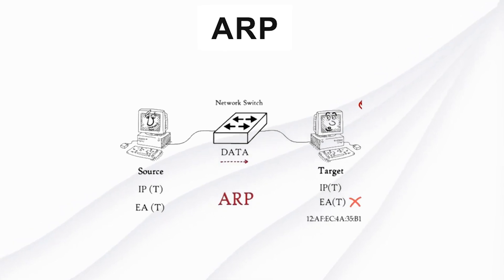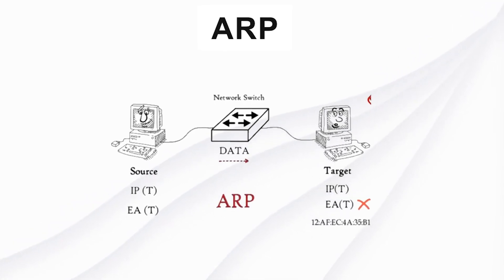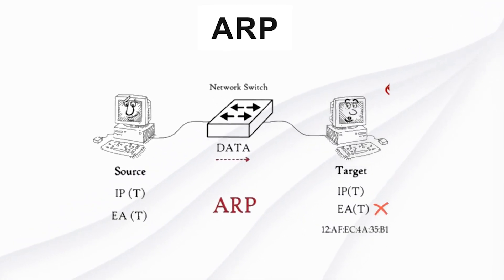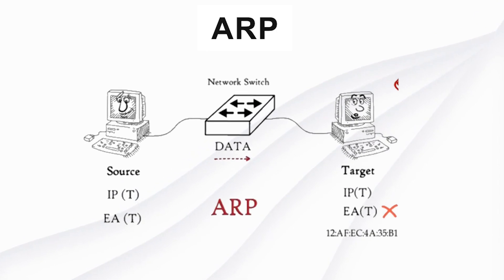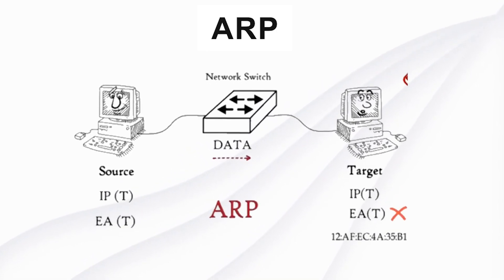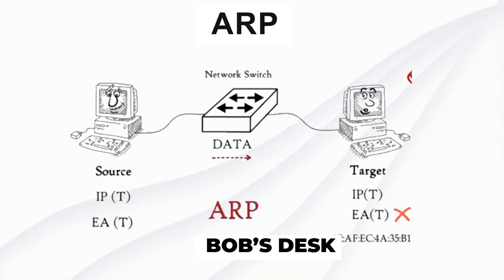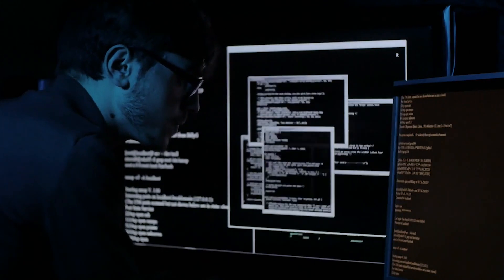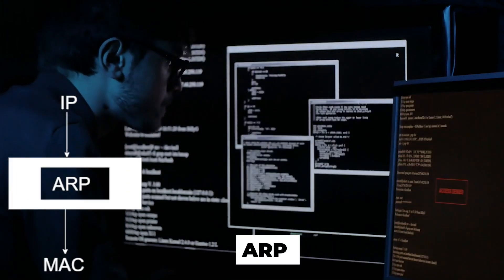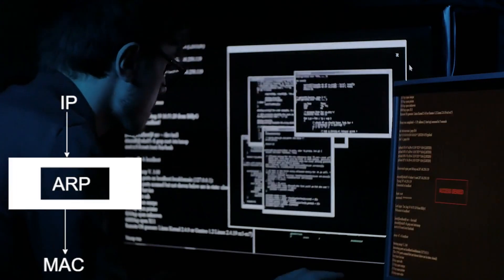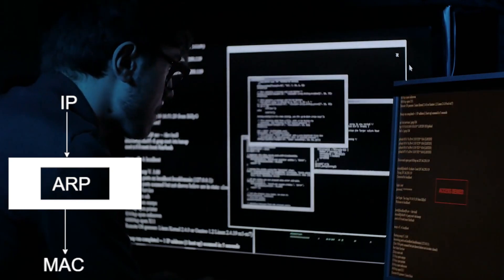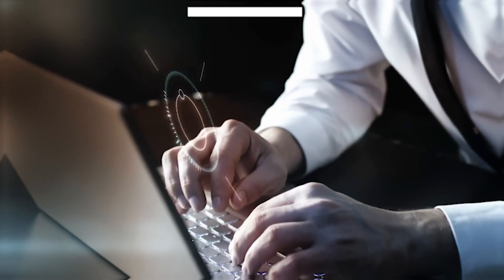And then we have ARP. ARP is like a translator that converts IP addresses into physical MAC addresses. Imagine you're in a big office and you need to find Bob's desk — ARP tells you where he's sitting. But ARP spoofing can trick you into thinking Bob's desk is somewhere it's not, leading your data to a hacker instead.